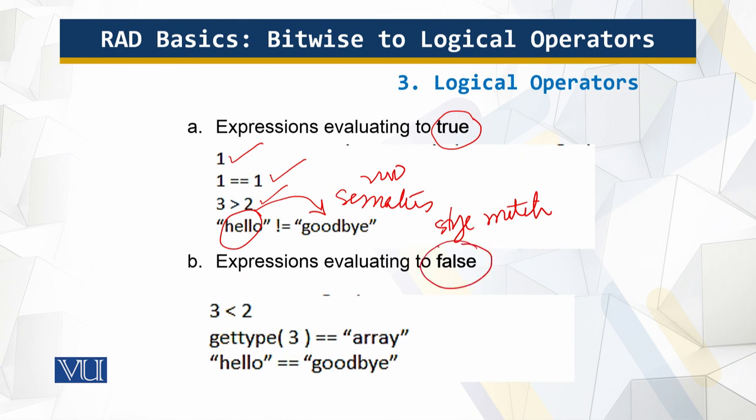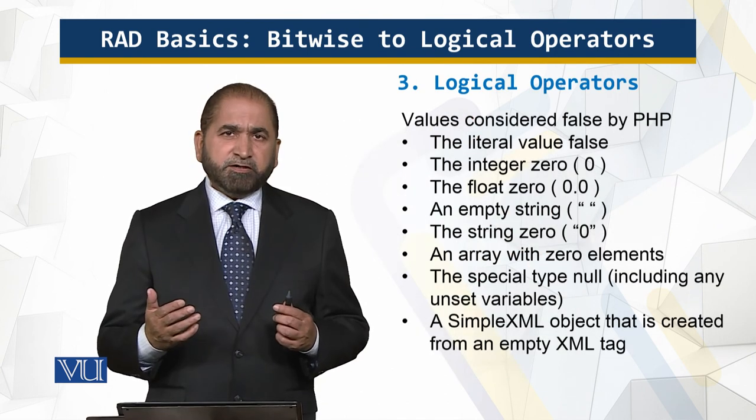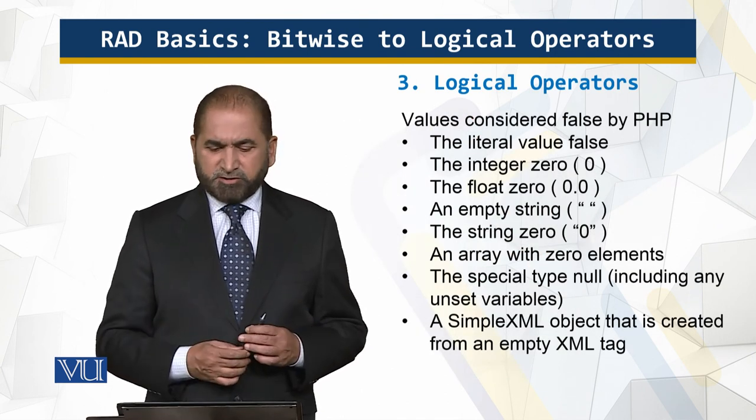And the expression which will always evaluate to false is that three is not less than two. This is wrong, so this is still false. And of course, hello is not same as goodbye and so on. So what more is to the logical operators?